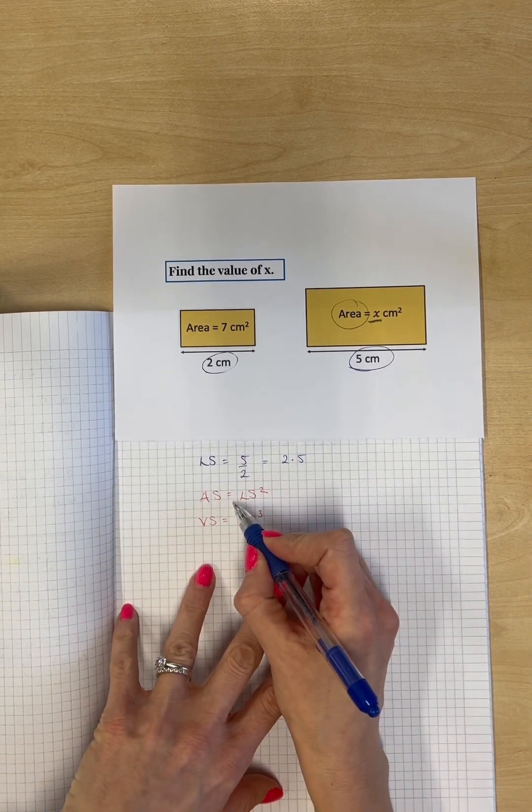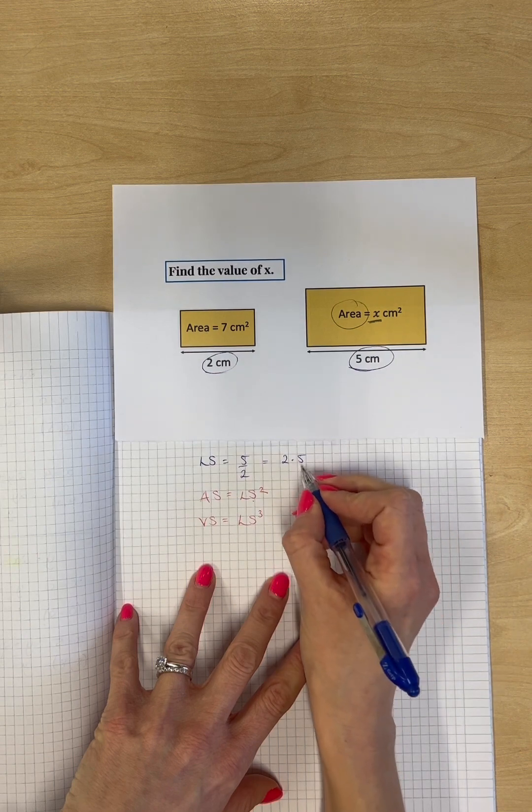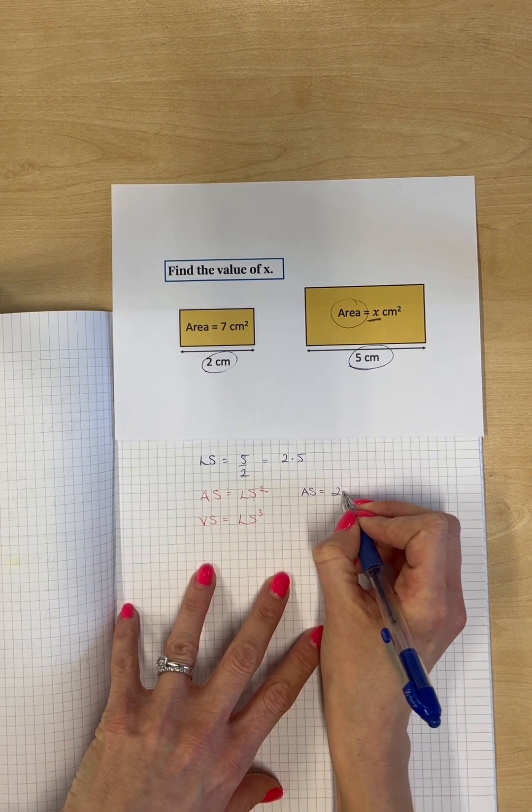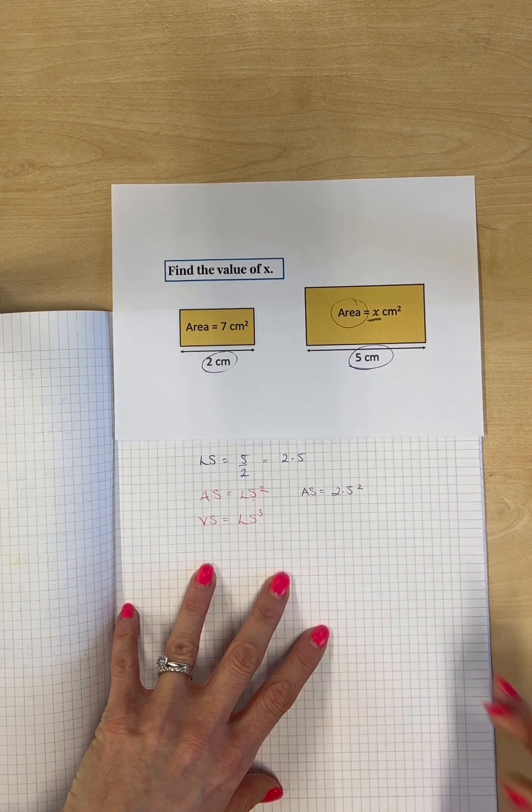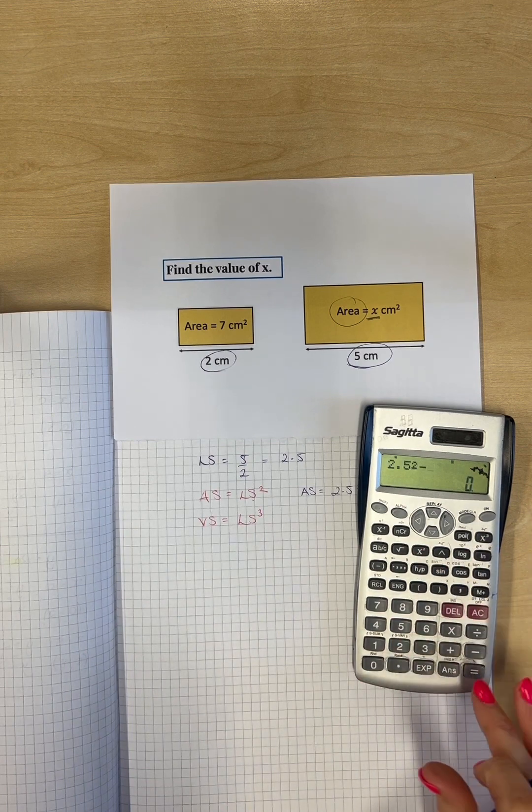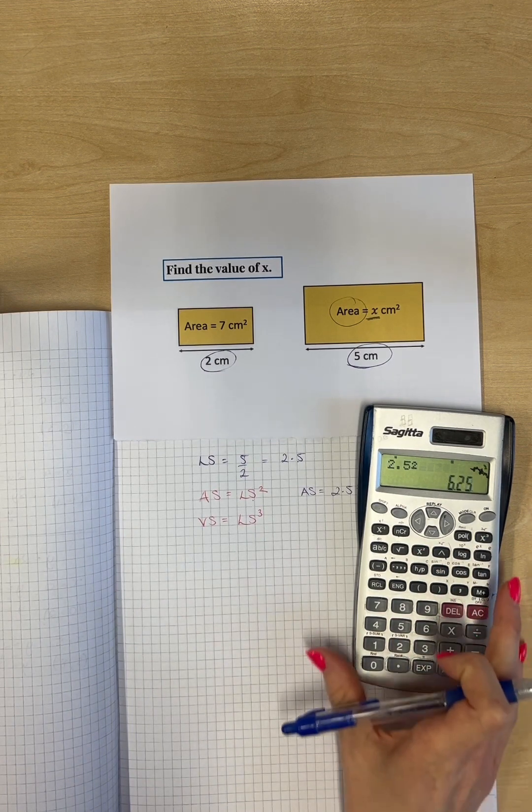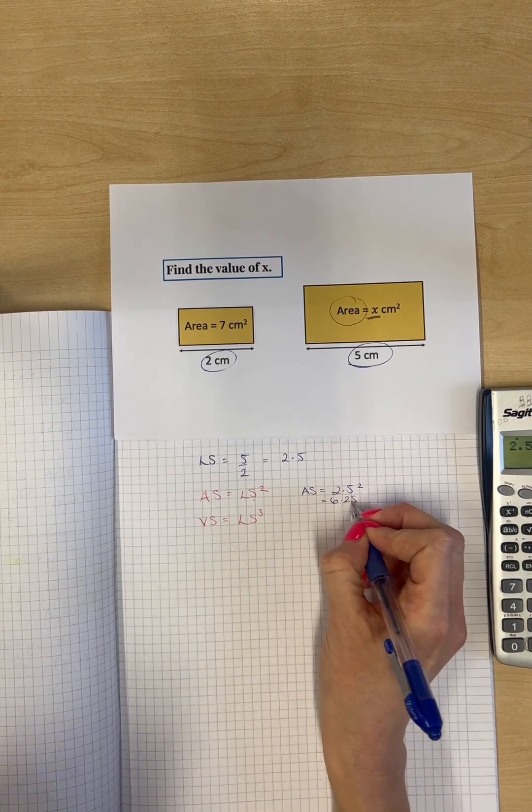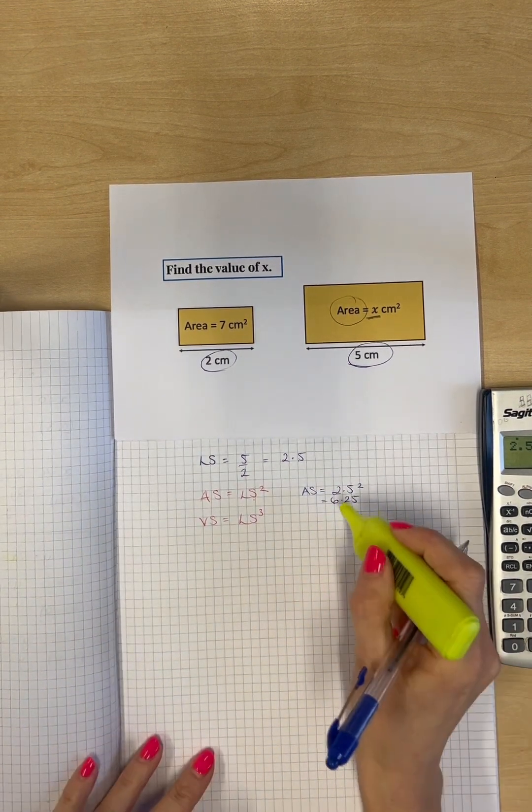So now we know that area scale is the length scale squared. So we know that that one is 2.5 squared. And we can work that out by doing 2.5 squared, which gives us 6.25. Great. Now we have our area scale factor.